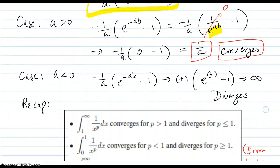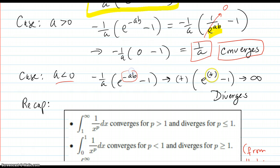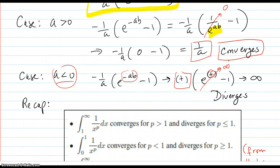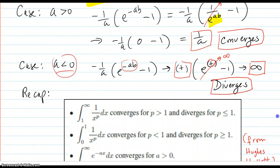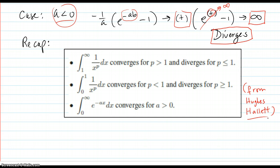In the case of a less than 0, since a is negative and b is positive, the exponent ab is negative times positive — actually a negative a makes the product positive — so e raised to a positive number gets very large. And negative 1 over a, since a is negative, is itself a positive number, so the whole thing goes to positive infinity: it diverges. Here's a nice recap from the textbook of the different rules we've seen. Basically, just graph a quick example and you'll be able to tell under which conditions the integrals converge or diverge.